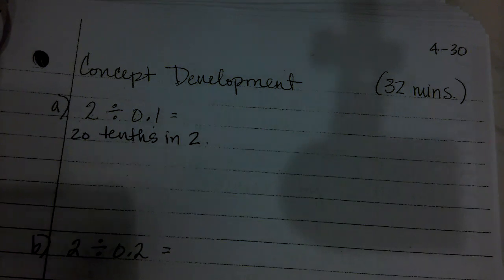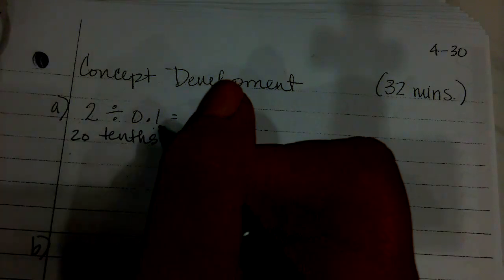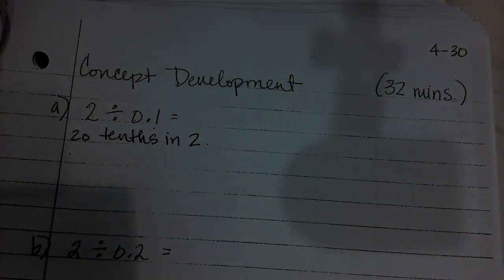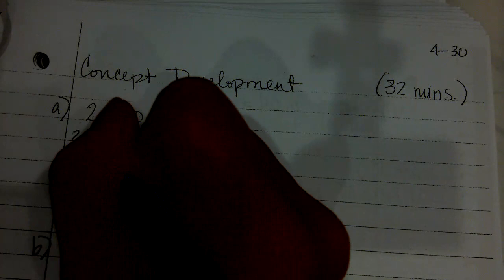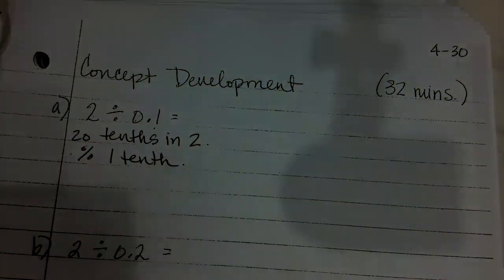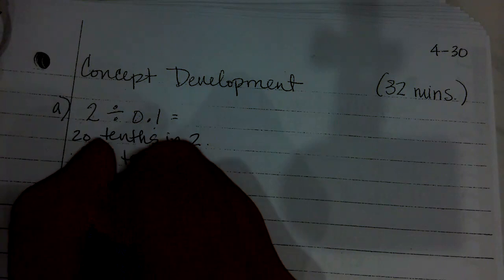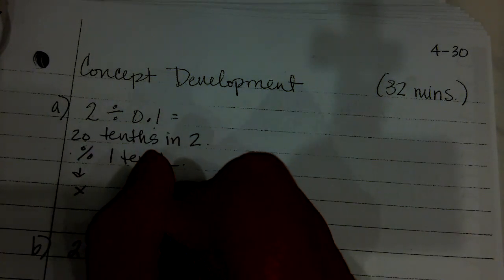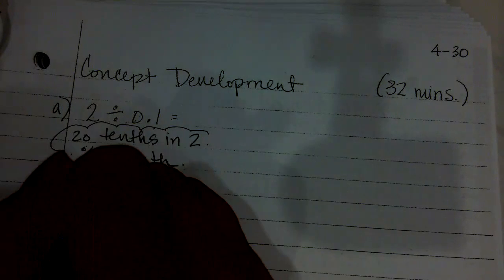So, how else do you know that is true? How about if you counted by tenths — 1 tenth, 2 tenths, 3 tenths, 4 tenths, 5 tenths, all the way up to 20 tenths. And then 20 tenths is equal to two wholes. What about 10 tenths? There are 10 tenths in one whole. So, there are 20 tenths in two. If you divide by one tenth, that's the same as multiplying by 10. Isn't that the conclusion we came to yesterday?